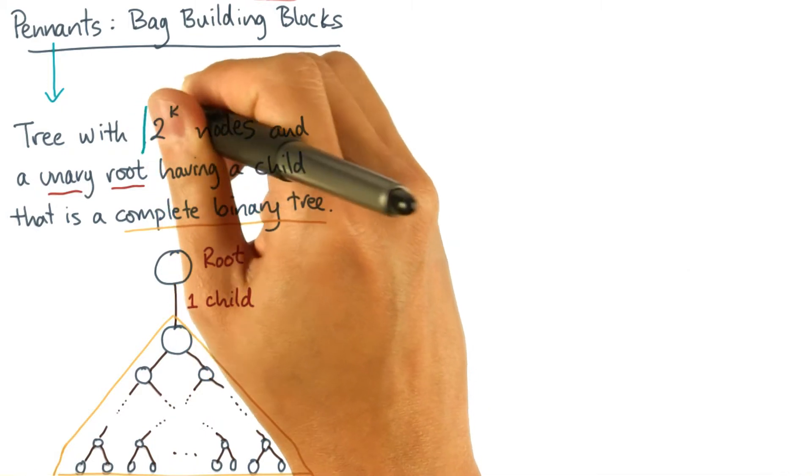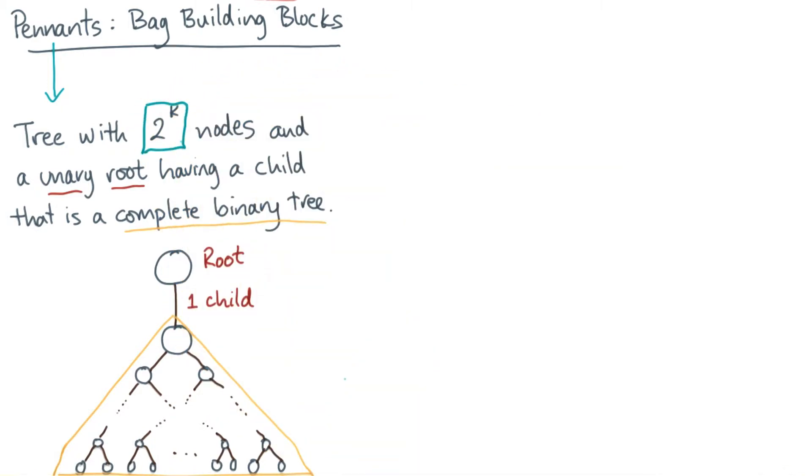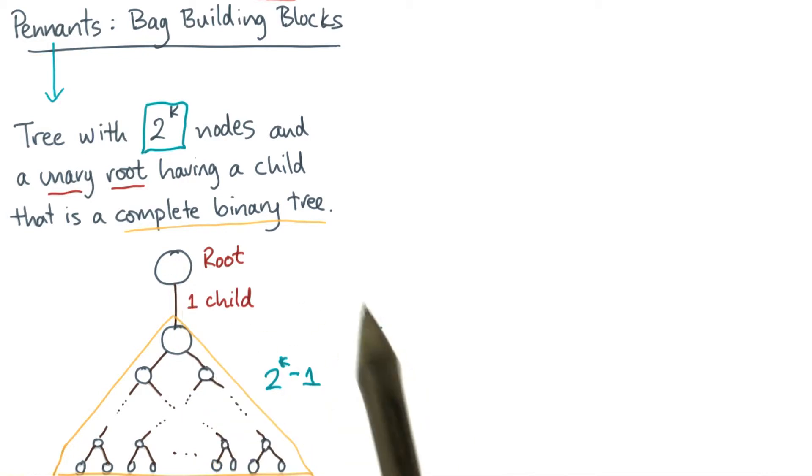Now a pennant has to have a power of two number of nodes. Now remember that a complete binary tree has to have almost a power of two number of nodes, in particular 2^k minus 1. And therefore, when we add the root, we get a power of two.